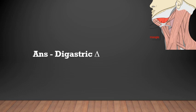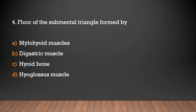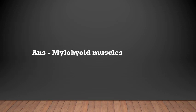The digastric triangle is seen between the anterior and posterior belly of the digastric muscle. The floor of the submental triangle is formed by the mylohyoid muscles. The answer: mylohyoid muscles.